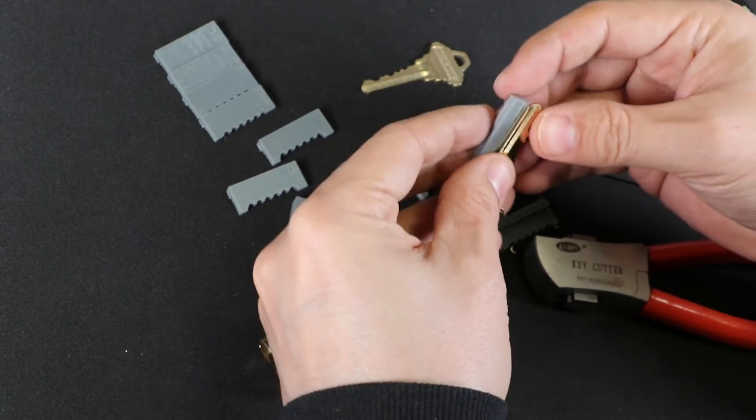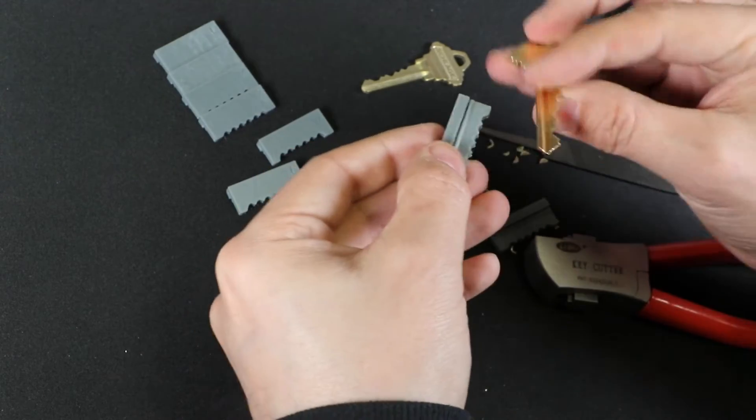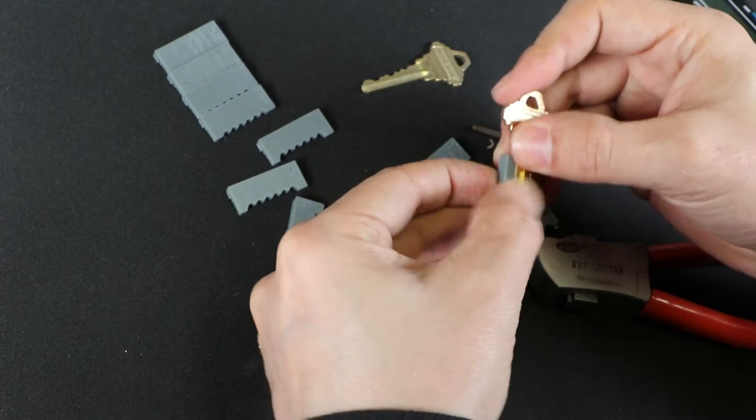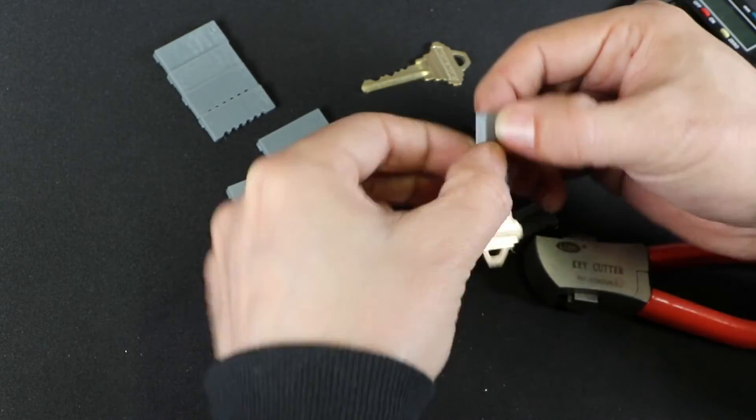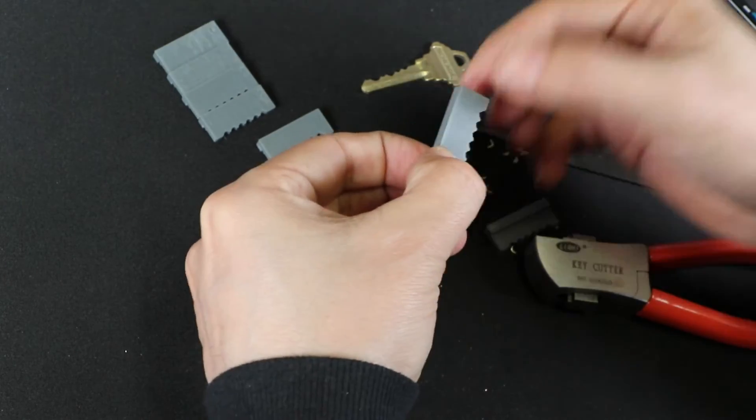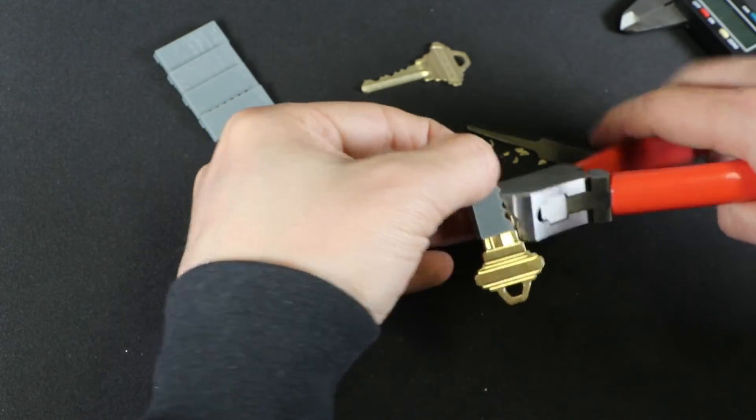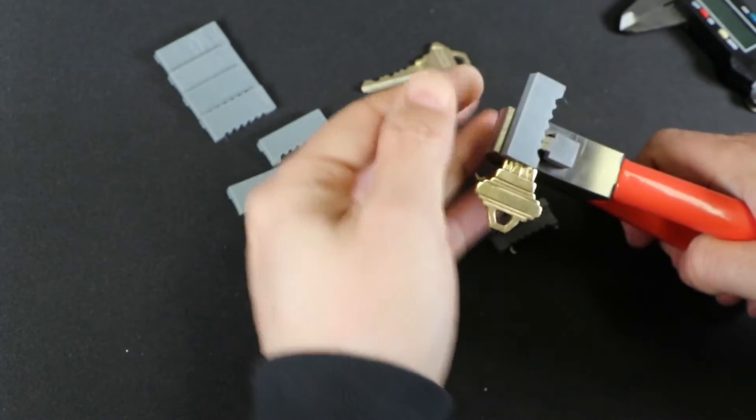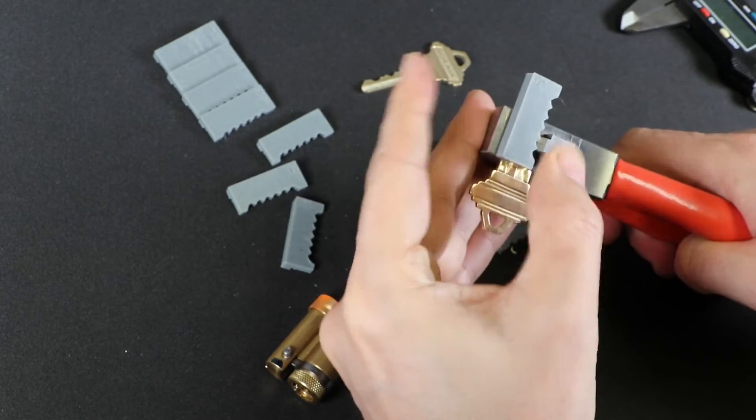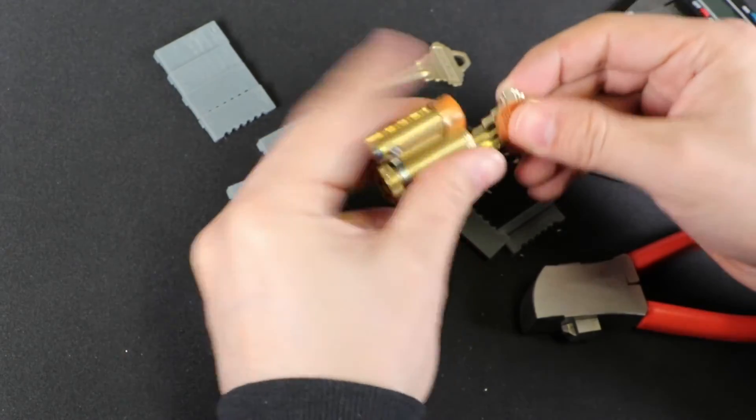So tight because some of the pins are being pushed up too high by this key. Yeah, on this side. Yep. So this is going to be the, I'm going to cut the four with a five, with the five guide. I'm going to cut the four. So that's going to be number two here. Cutter the right one around. Get it in there like that. Okay. See if it's still tight.